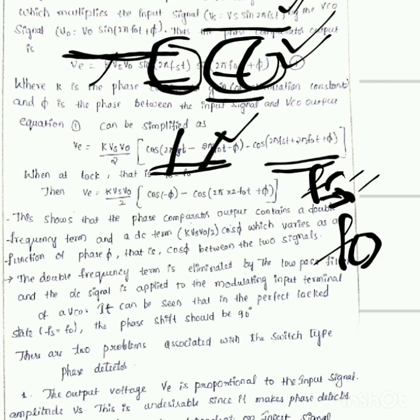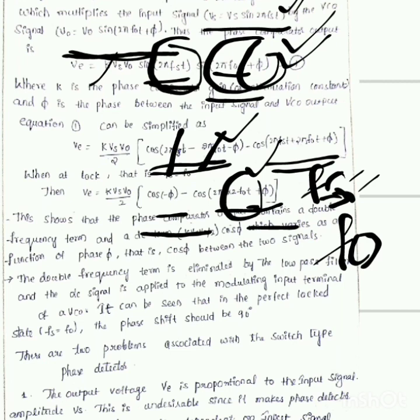When the PLL is in the locked condition, the input frequency equals F0, so the 2πFst and 2πF0t terms cancel out, leaving only the −π term from cos(A−B). For the cos(A+B) term, we get cos(2π·2F0t + π), showing that the phase comparator output contains a double frequency term at 2F0t and a DC term equal to K·Vs·V0/2.